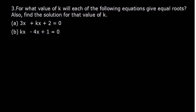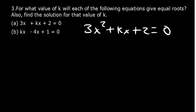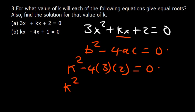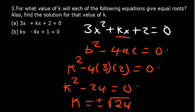The next question asks: for what value of k will 3x squared plus kx plus 2 equal 0 have equal roots? For equal roots, the discriminant must equal 0. Here b is k, a is 3, and c is 2. So k squared minus 4 times 3 times 2 equals 0, giving k squared minus 24 equals 0. Therefore k equals plus or minus the square root of 24.